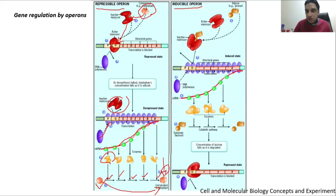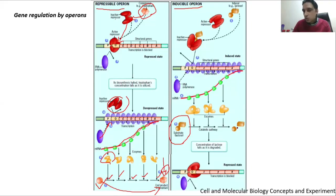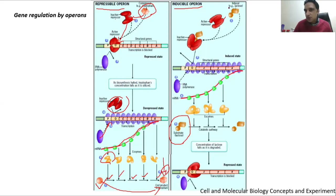There are three structural genes A, Y, and Z. When transcribed, they produce messenger RNA. When translated, they produce three enzymes. These three enzymes convert lactose through three enzymatic steps into a product. It is a catabolic pathway — it will consume the lactose substrate and produce energy.